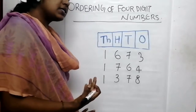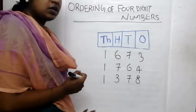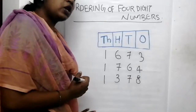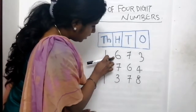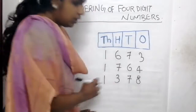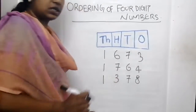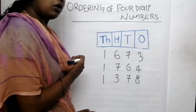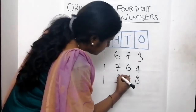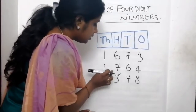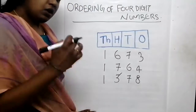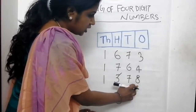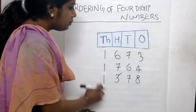We have to move to the next place. The next place is hundreds place. We have to compare numbers in the hundreds place. What are the numbers in hundreds place? It's 6 here, 7 here, and 3 here. In between 6, 7, and 3, which number is smallest? We know 3 is smaller than both 6 and 7. So 1,378 is the smallest number among these.